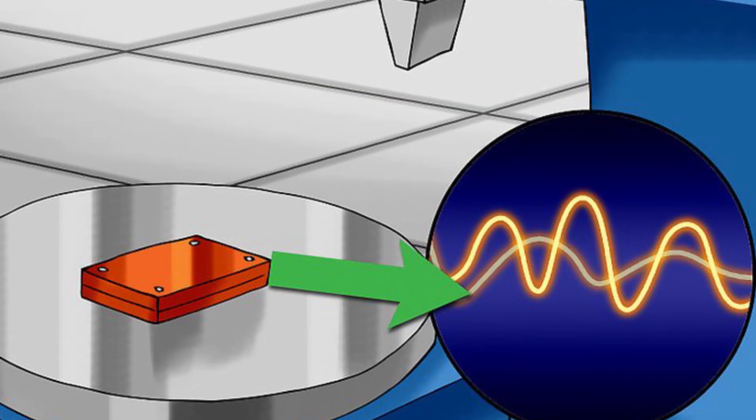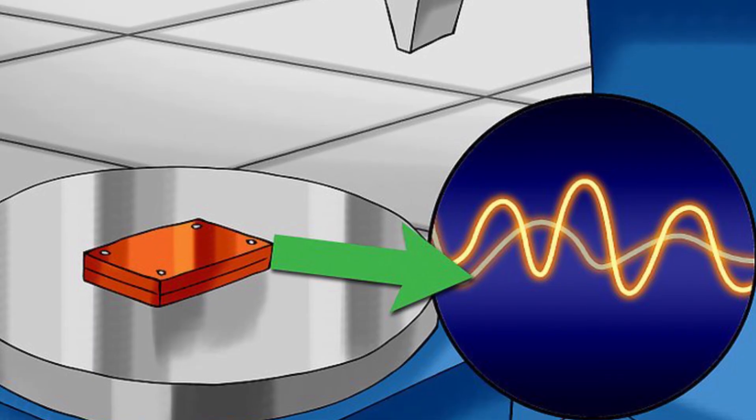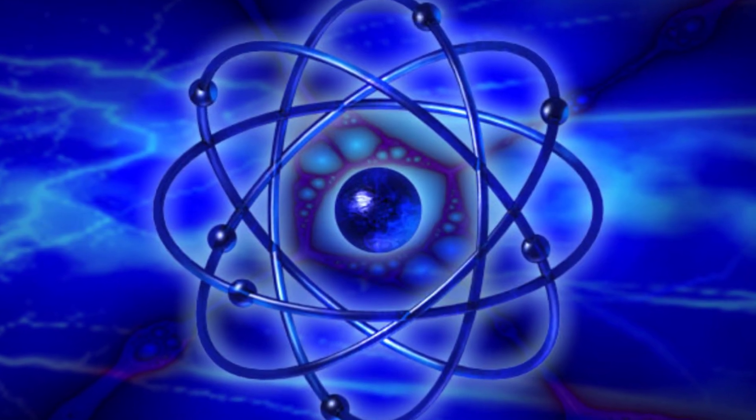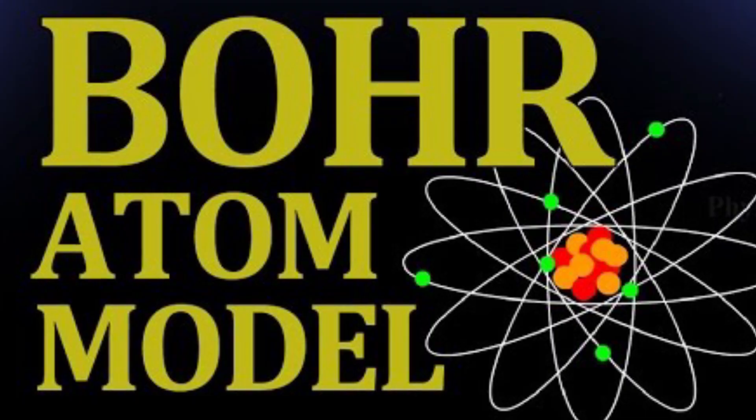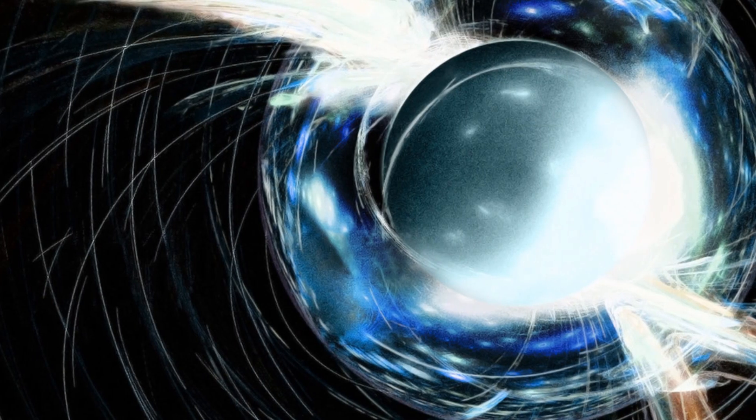Now you've probably heard of splitting the atom countless times before, but what exactly does it mean? Well, based on the vision of the atom created by Niels Bohr and Ernest Rutherford, it was believed that the atom could be split using a nuclear reaction.